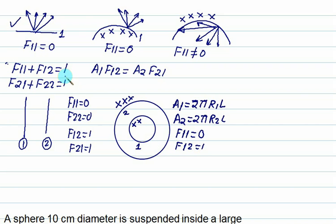To find out the other factor, we will use the reciprocity rule. A1 is 2 pi R1 L into F12. F12 is 1 equals to 2 pi R2 L into F21. So 2 is cancel, pi is cancel, L is cancel. So F21 is R1 by R2.